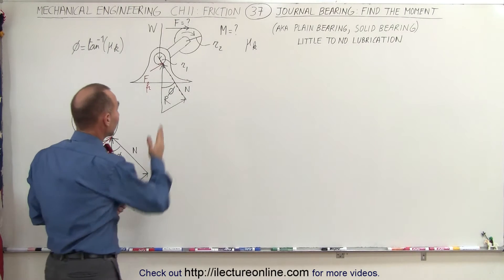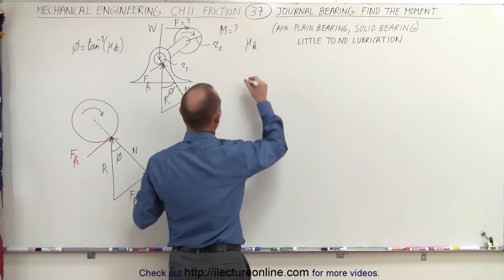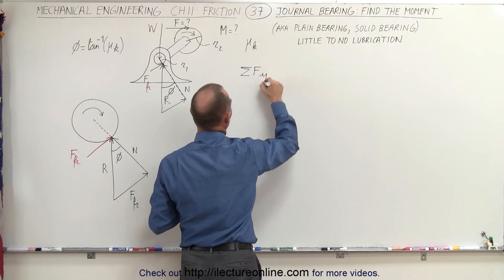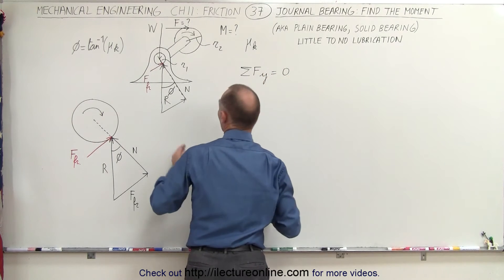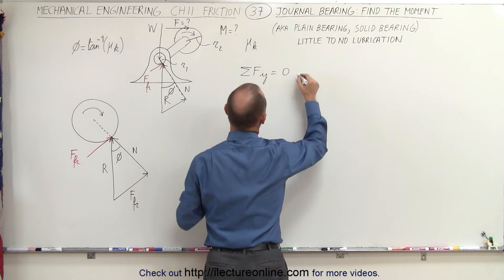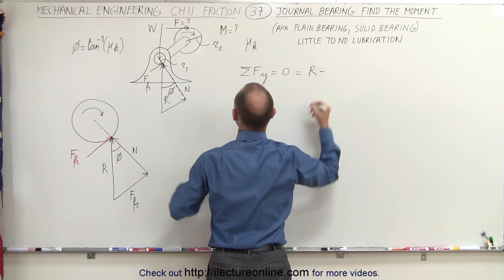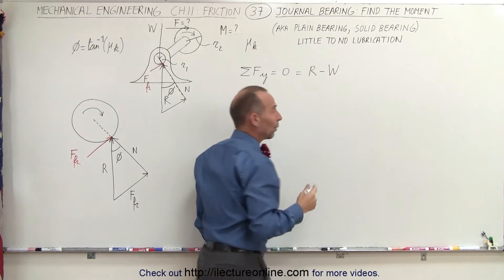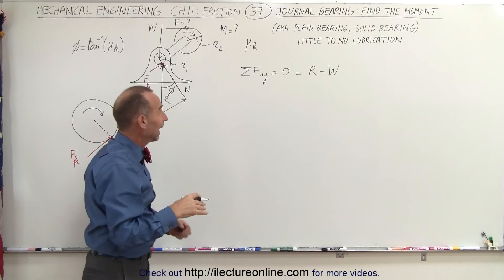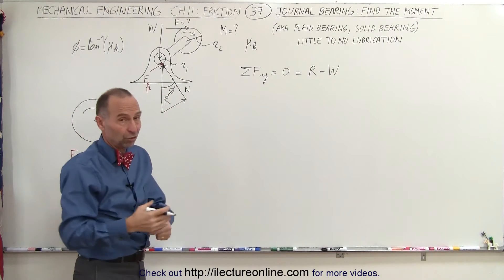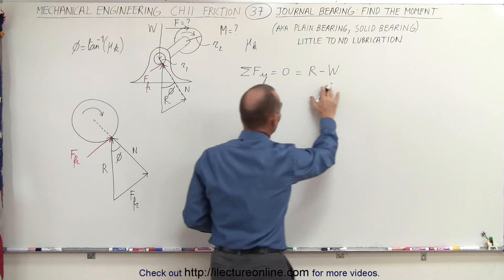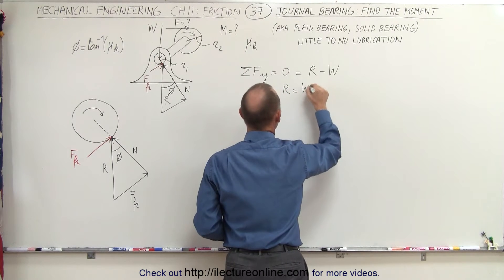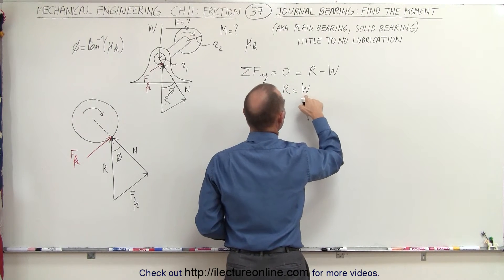If we sum all forces in the y-direction, they must add up to zero. We have the reaction force pointing up (positive) minus the weight on the axle pointing downward. The weight can include both the weight of the axle and any load on it, or simply the weight of the axle. This shows that the reaction force equals the magnitude of the weight.